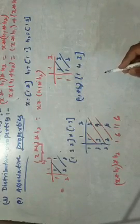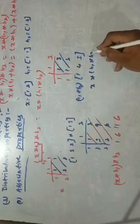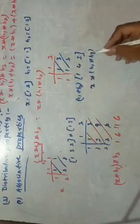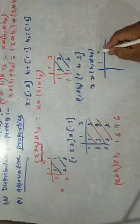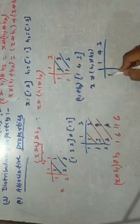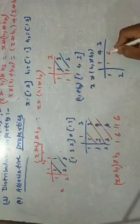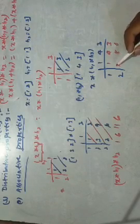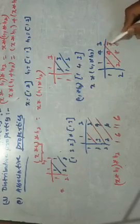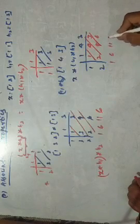X convolved with the result of H1 convolved with H2 — the result is 1, 4, 3. X is 1, 2. In matrix form: 1, 4, 3, 2, 8, 6. After marking diagonal, the result is 1, 6, 11, 6. This is the answer of H1 convolved with H2, and its result convolved with X.